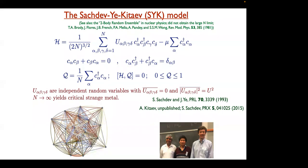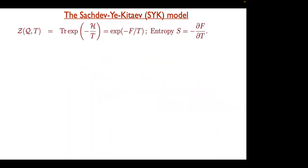In this talk, I will focus on one quantity: the partition function. I'm going to compute, for a given value of q, the trace of the exponential of the Hamiltonian divided by the temperature. As usual, this defines the free energy F, which will be of order N. The entropy is the derivative of the free energy with respect to temperature. This is the thermodynamic quantity to compute — it's really a counting problem.